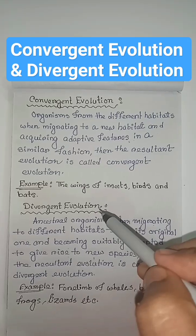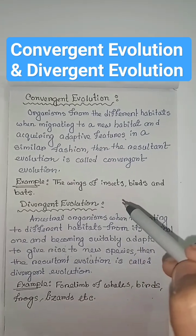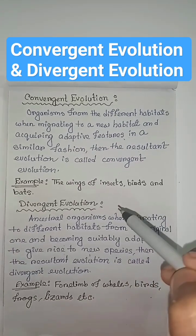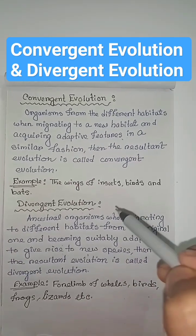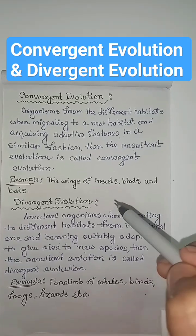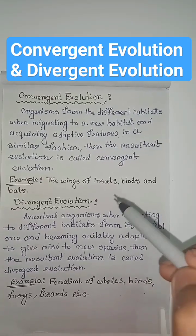The predecessors of these organisms were inhabitants of different places, but these organisms developed wings to explore the same volant atmosphere.